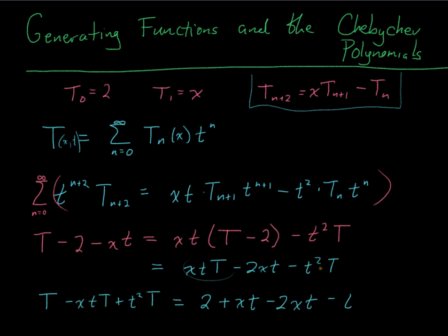This one already had a t. That's why you should never do algebra in public. Alright, so we've got, if I just factor out my T here, I've got (1-xt+t²)T is 2, those two combined together to be minus xt, and divide by this guy.